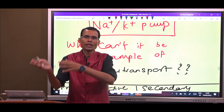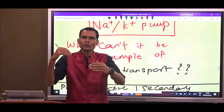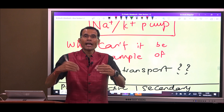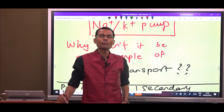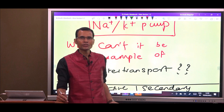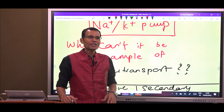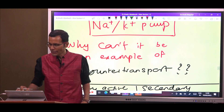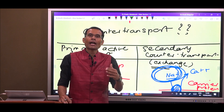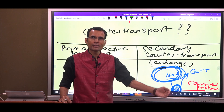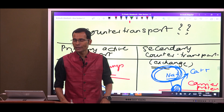So secondary active transport, the type counter transport — co and counter — counter transport is also called antiport, also called exchange. So why not call the sodium-potassium pump an example of exchange, antiport, or counter transport? He applied his own logic, but that is not correct. The sodium-potassium pump is primary active transport. How is counter transport different from primary active transport?